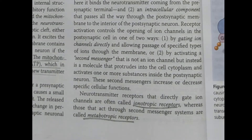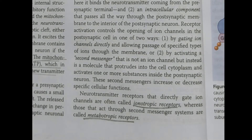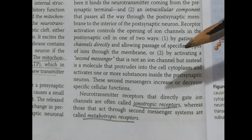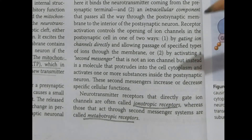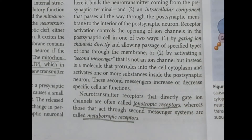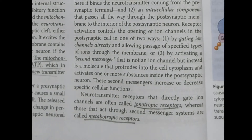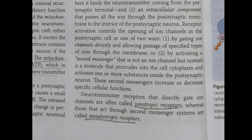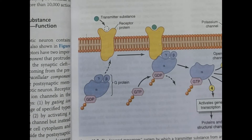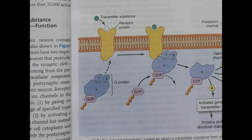Neurotransmitters that directly open ion channels are known as ionotropic receptors, whereas those working via the second messenger system — where the G protein breaks into subunits and the alpha unit does the work — are known as metabotropic receptors.